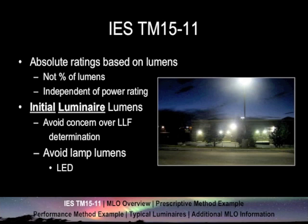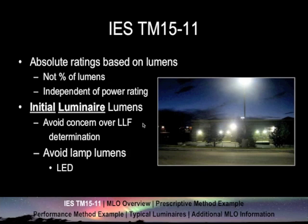When cities or applicants are reviewing submittals, make sure they never use what we call light loss factor. By using initial luminaire lumens, the light loss factor equals one — it is not maintained. This is something that a lot of cities or reviewers will miss: if you design with a light loss factor of 0.7, the numbers on paper look a lot lower than what it's actually going to be when you initially turn on the lights and when they get their certificate of occupancy. So light loss factor should always be 1.